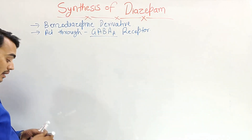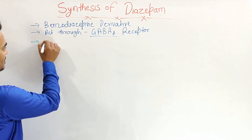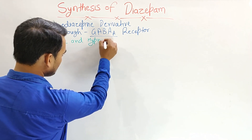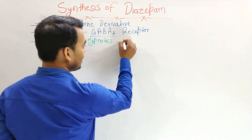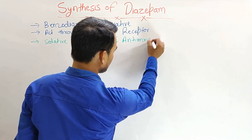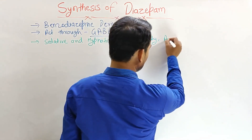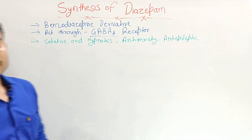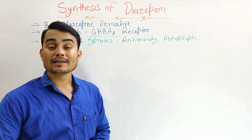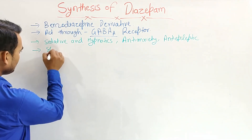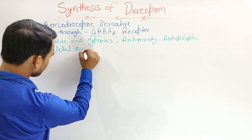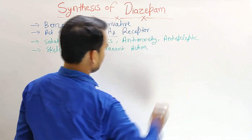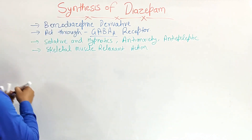What are the uses of diazepam? Diazepam has several uses. It is used as a sedative and hypnotic, as an anti-anxiety agent, and as an anti-epileptic. A special point: not all benzodiazepines, but only diazepam has skeletal muscle relaxant property.